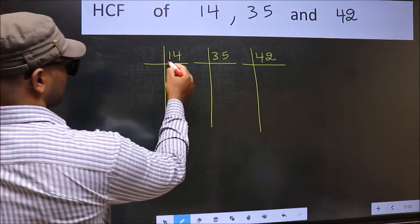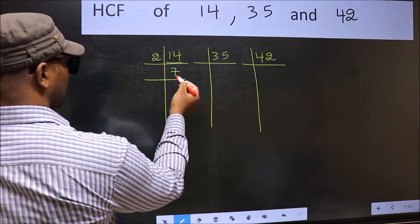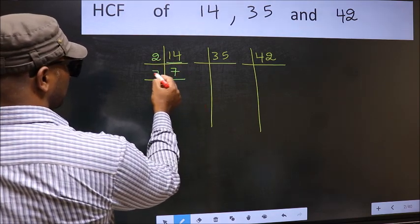Here we have 14. 14 is 2 times 7. Now 7, 7 is a prime number so 7 times 1 is 7.